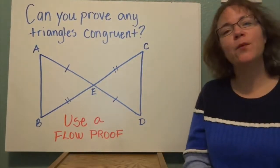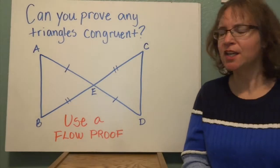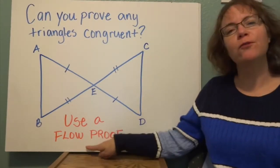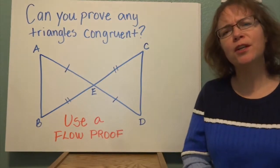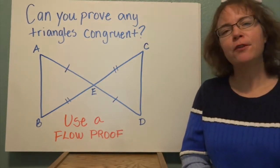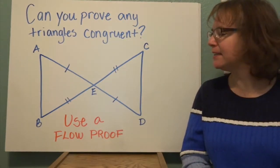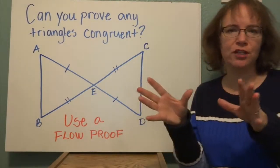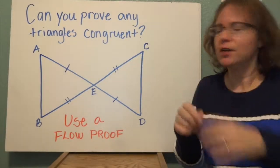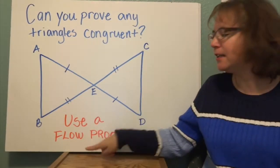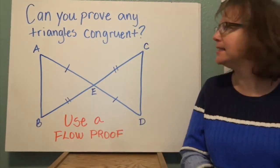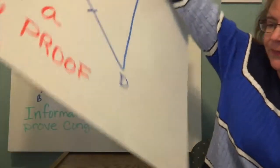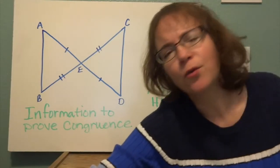We're going to be looking at a specific way to prove triangles congruent. We've looked at triangle congruence before, but now we're going to prove it using a flow proof. A flow proof is a nice way to organize information by level. In a two-column proof, you're not sure which information comes together to give you a statement, but a flow proof makes that easy to see. We're going to be looking at proving triangles congruent, and we know some shortcuts for that.